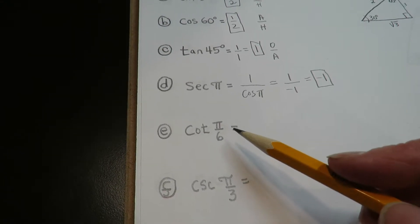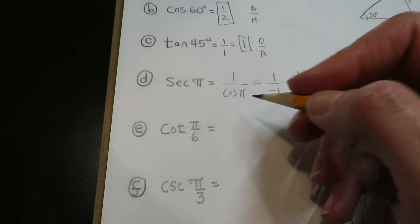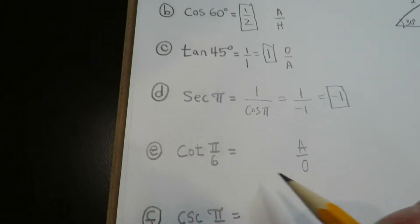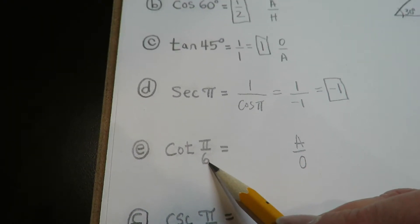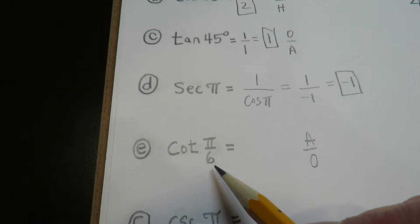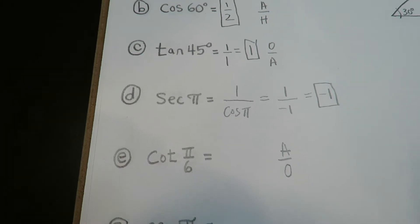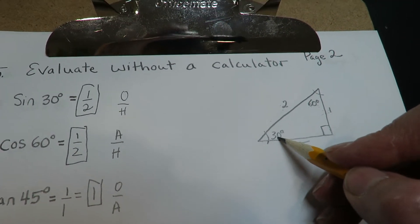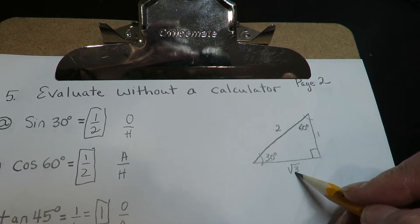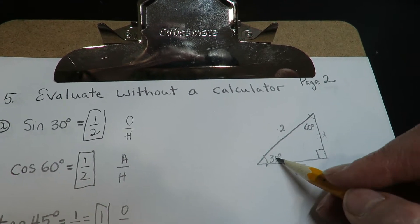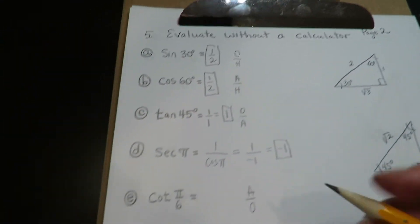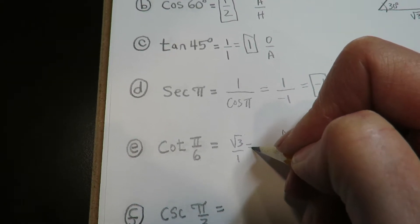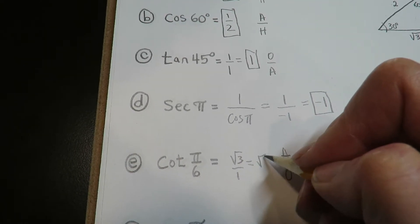Cotangent of pi over six — cotangent is the adjacent over the opposite. We have to go to an angle of pi over six. Pi over six as a radian is equivalent to 30 degrees. So we go over to 30 degrees and we need adjacent over opposite, which is radical three over one. We can rewrite that as just radical three.